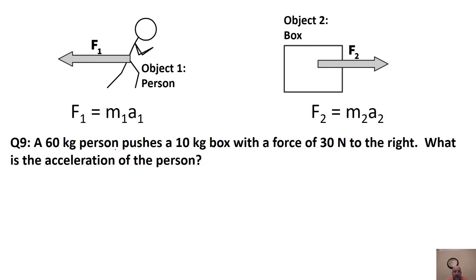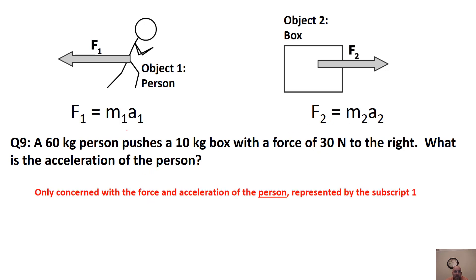A 60-kilogram person pushes a 10-kilogram box. He's pushing to the right — what's the acceleration of the person? We're only concerned with the person. Since the box was pushed to the right with 30 newtons, this person is pushed backwards to the left with 30 newtons, and has a mass of 60 kilograms.